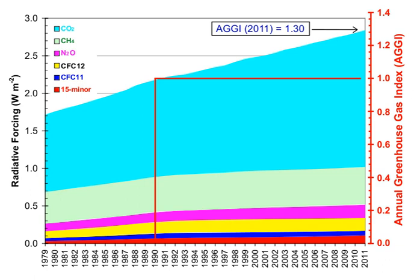The spread of land plants is thought to have reduced CO2 concentrations during the late Devonian, and plant activities as both sources and sinks of CO2 have since been important in providing stabilizing feedbacks. Earlier still, a 200-million-year period of intermittent widespread glaciation extending close to the equator appears to have been ended suddenly, about 550 Ma, by a colossal volcanic outgassing that raised the CO2 concentration of the atmosphere abruptly to 12% — about 350 times modern levels — causing extreme greenhouse conditions and carbonate deposition as limestone at the rate of about 1 mm per day. This episode marked the close of the Precambrian aeon, succeeded by the generally warmer conditions of the Phanerozoic, during which multicellular animal and plant life evolved.